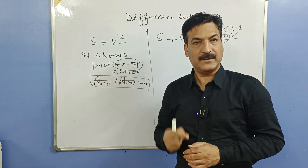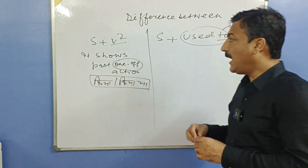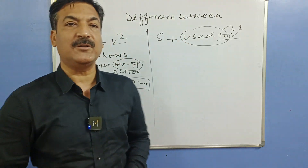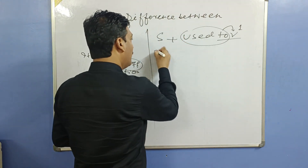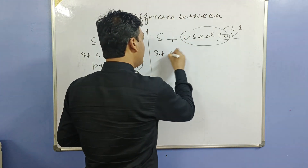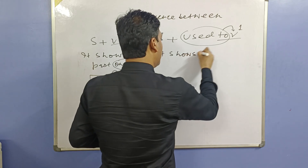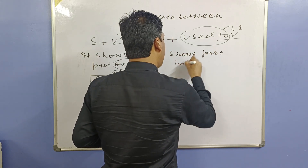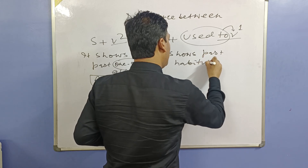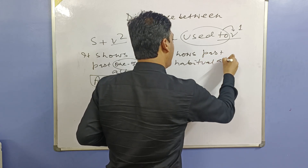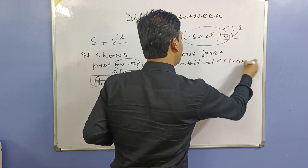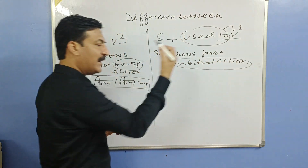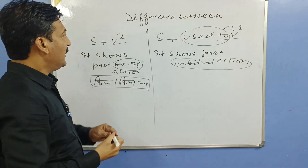Ab aap kahenge — 'used to' bhi past mein istemal hota hai, toh yeh kaise alag hoga? Yaad rakho: 'used to' shows past habitual action. Aur aapko pata hai — habit ek baar nahi hoti, woh baar baar hoti hai. V2 = ek baar; habitual action = baar baar.